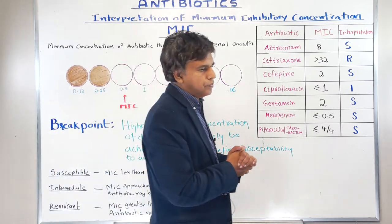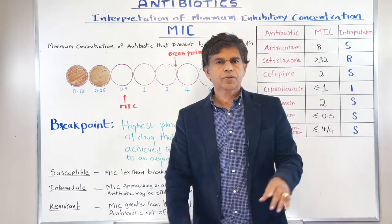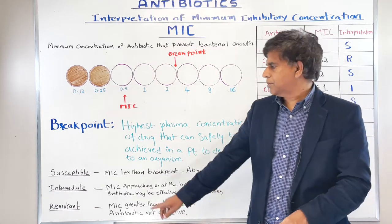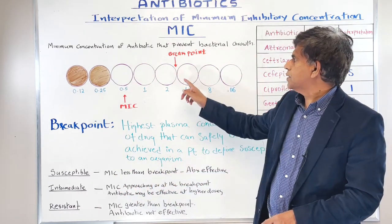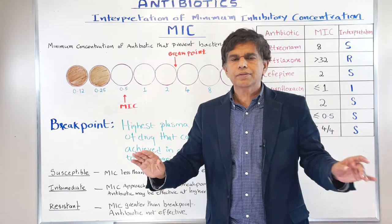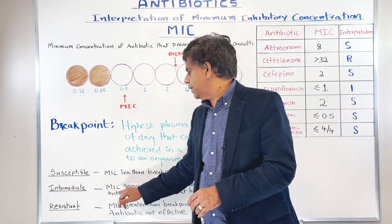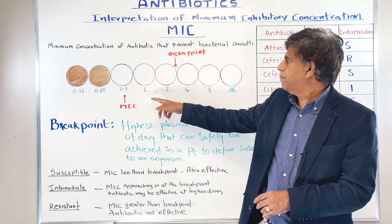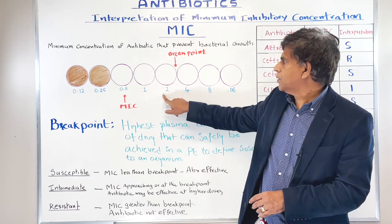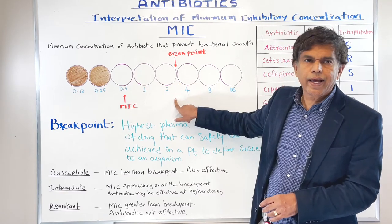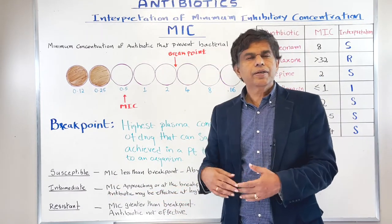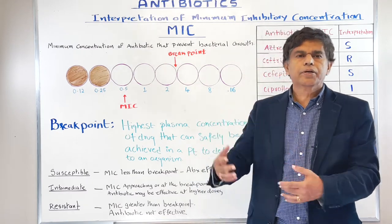Now let's look at the interpretation terms. The first is susceptible (S): MIC is less than the breakpoint, meaning you can safely use that drug. The next is intermediate (I): MIC is approaching or equal to the breakpoint. At 0.5, 1, or 2, the growth was not inhibited, so the MIC equals the breakpoint — that's intermediate. It may or may not be effective, but it can work if you use a higher dose.